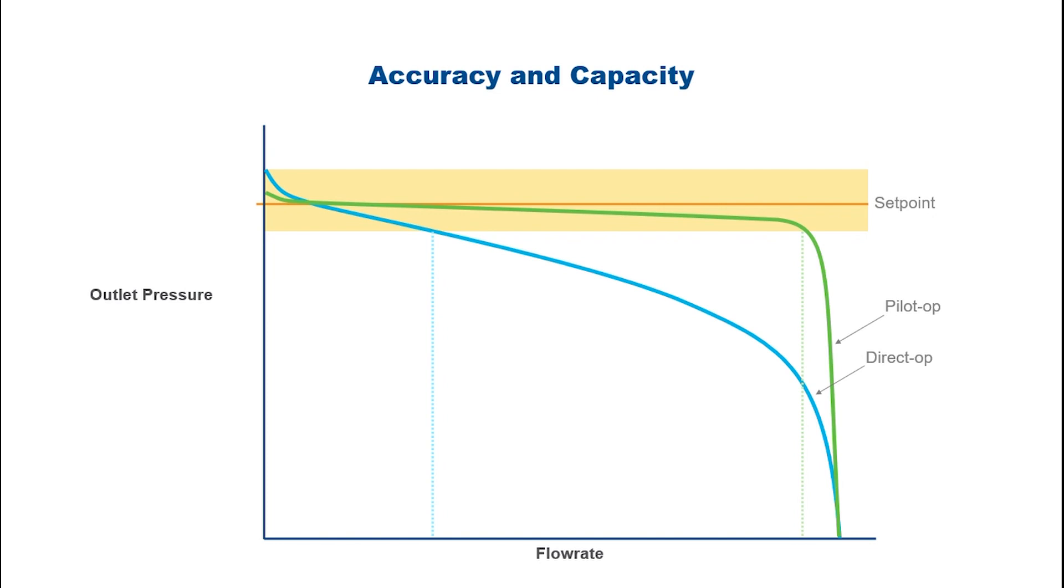A notable exception is with some spring-loaded products designed for low pressure settings, such as inch water column or millibar set points, which achieve excellent accuracy, taking advantage of boosts to offset the droop.